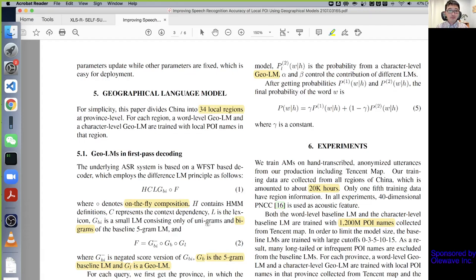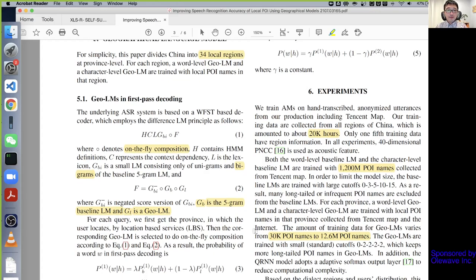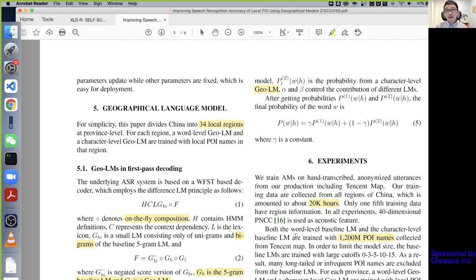The geo-based language model is standard. They already use the geo-based graph in the first pass decoding. You can see they have an interpolation. This is the baseline n-gram model probability and this is the geo language model probability. Then in the second pass, they again use the geo language model again.